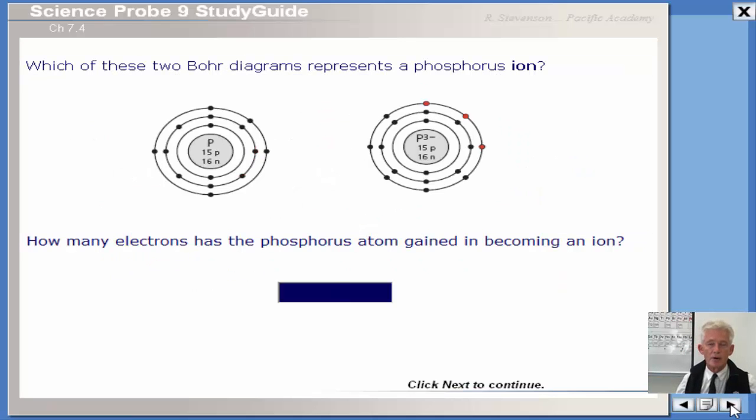Which of these two Bohr diagrams represents a phosphorus ion? Phosphorus is neutral. Fifteen protons means it has fifteen electrons. If you count the electrons here, two, eight, and five, you have fifteen. Easiest way of knowing that this one is the ion is just looking at this. P3-, the fact that it has a charge, tells you that it has an ion charge, or it's gained or lost electrons. Because it's negative, it must have gained three negative electrons, and that's what these three extra electrons signify there.